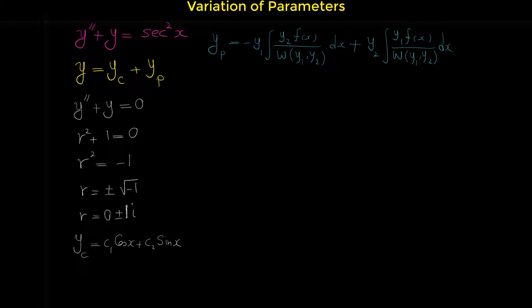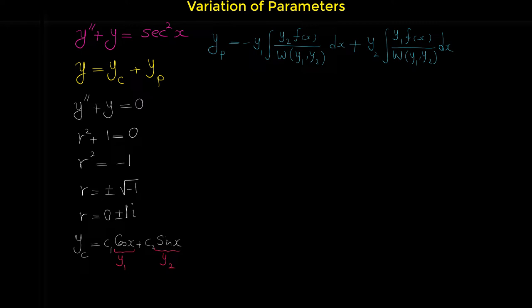In this formula, y1 and y2 are the two functions found in the complementary solution. So y1 is cosine x and y2 is sine x — or you can swap them, it doesn't matter which you call y1 or y2. And f of x is the function on the right side of the non-homogeneous differential equation, so f of x equals secant squared x.